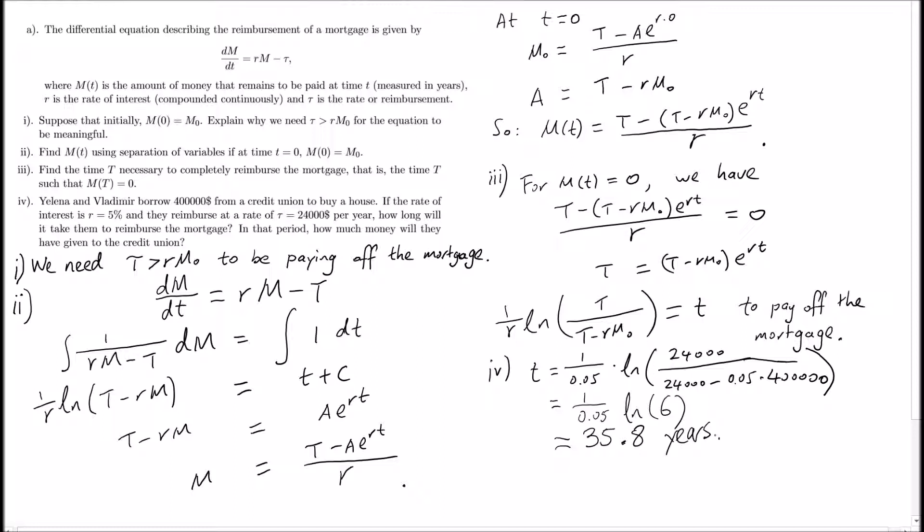The question asks us how much would we pay all together. Well, if every year we pay $24,000, then the total amount will just be 24,000 times the number of years, which is 35.8.